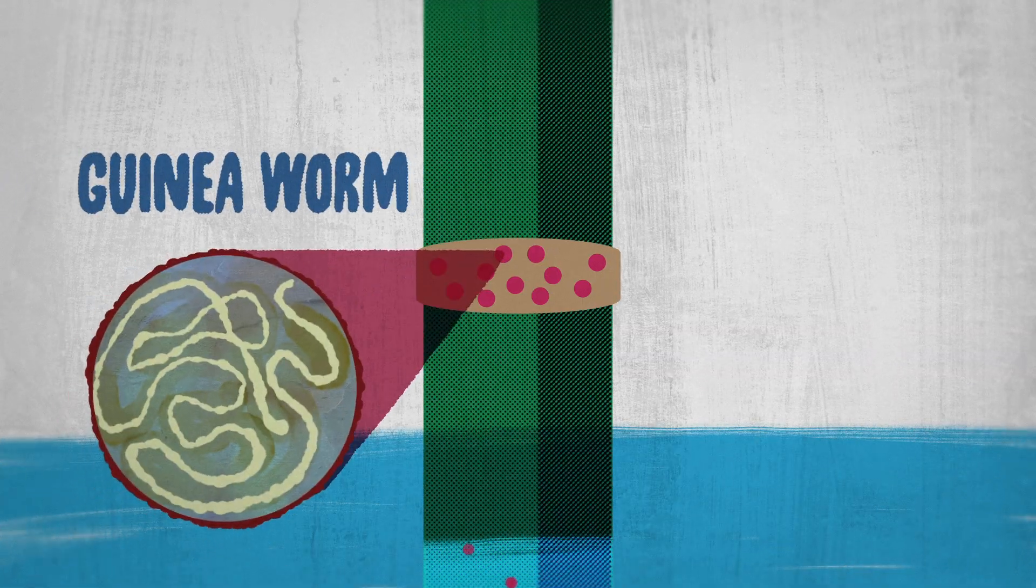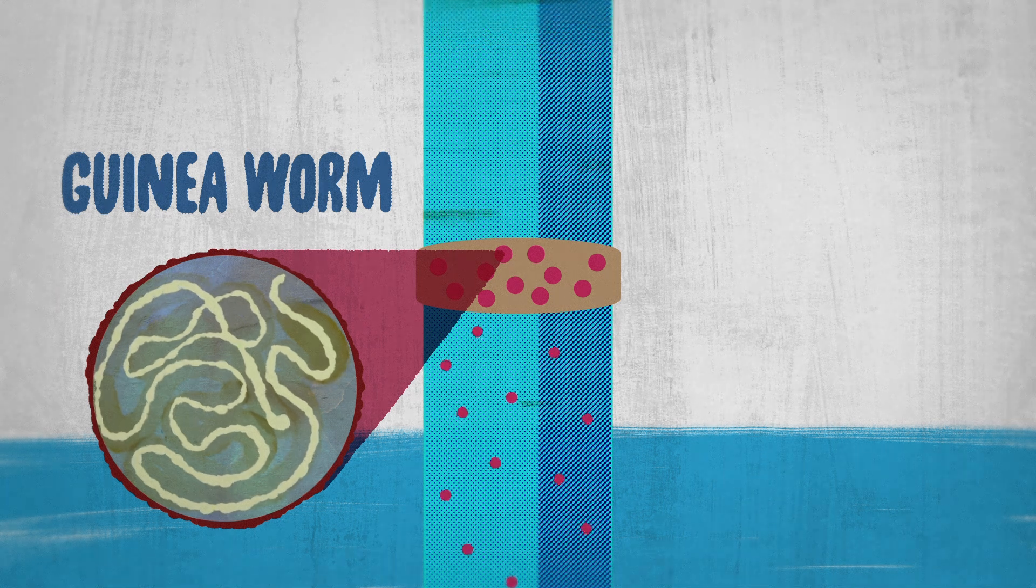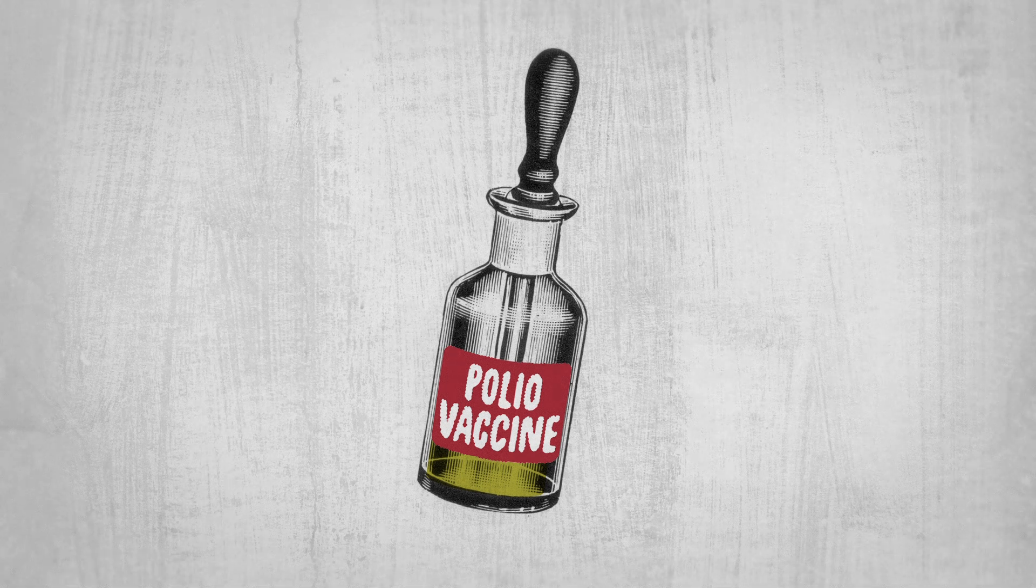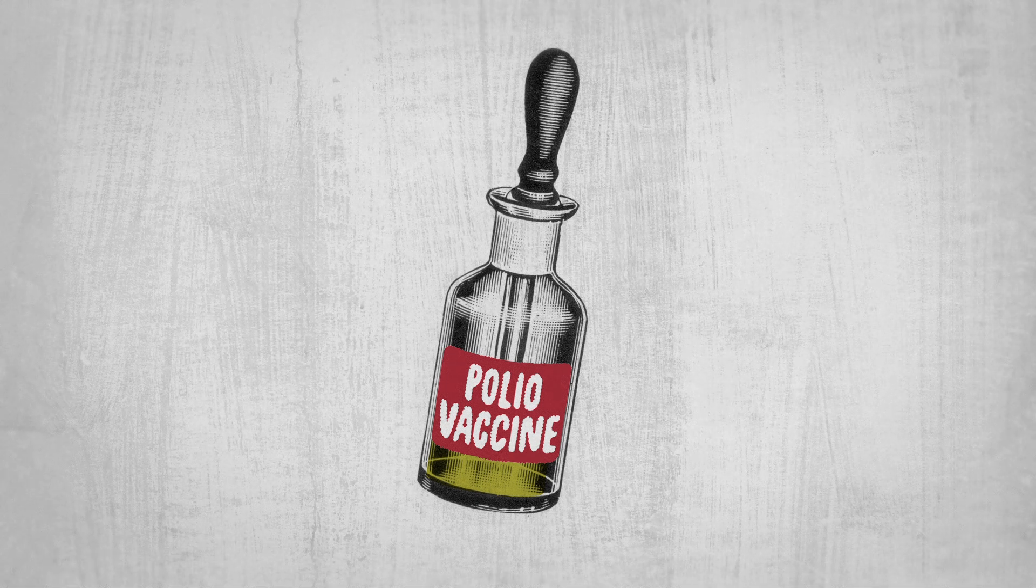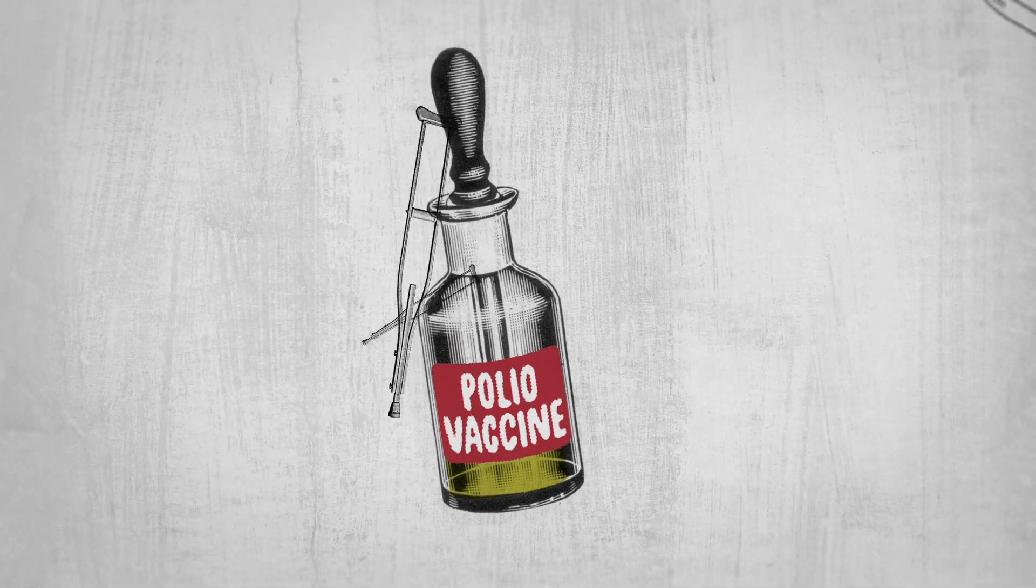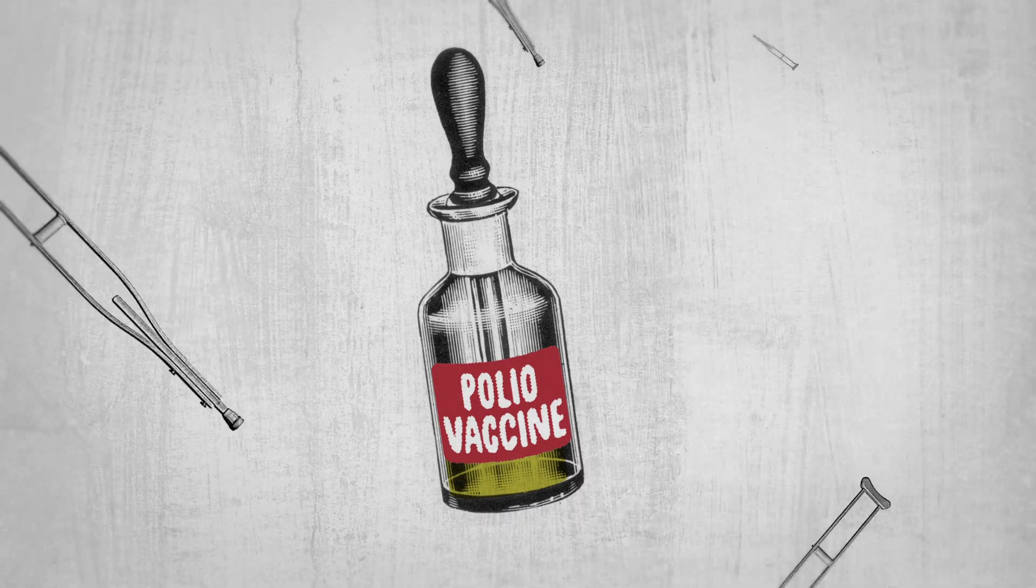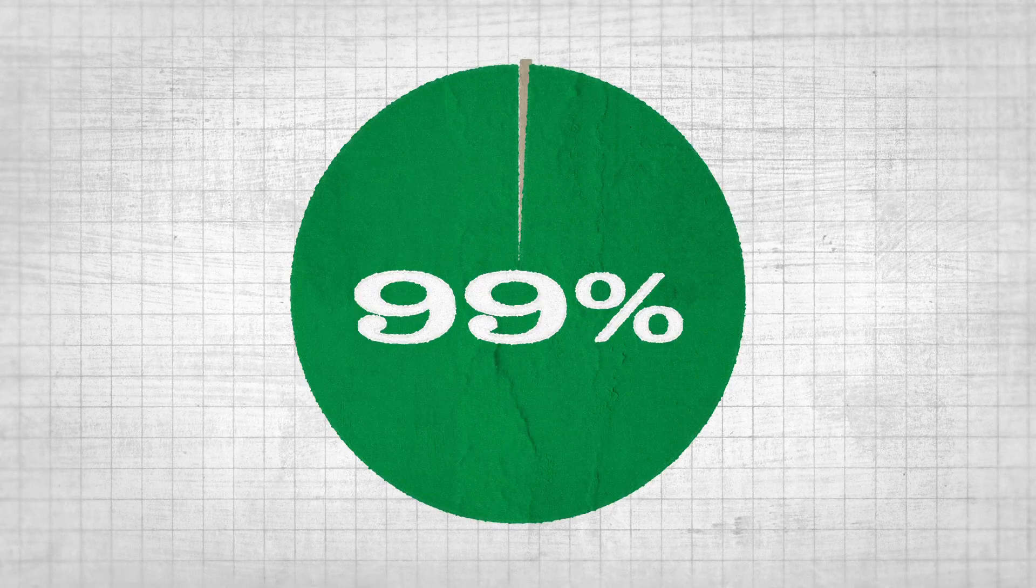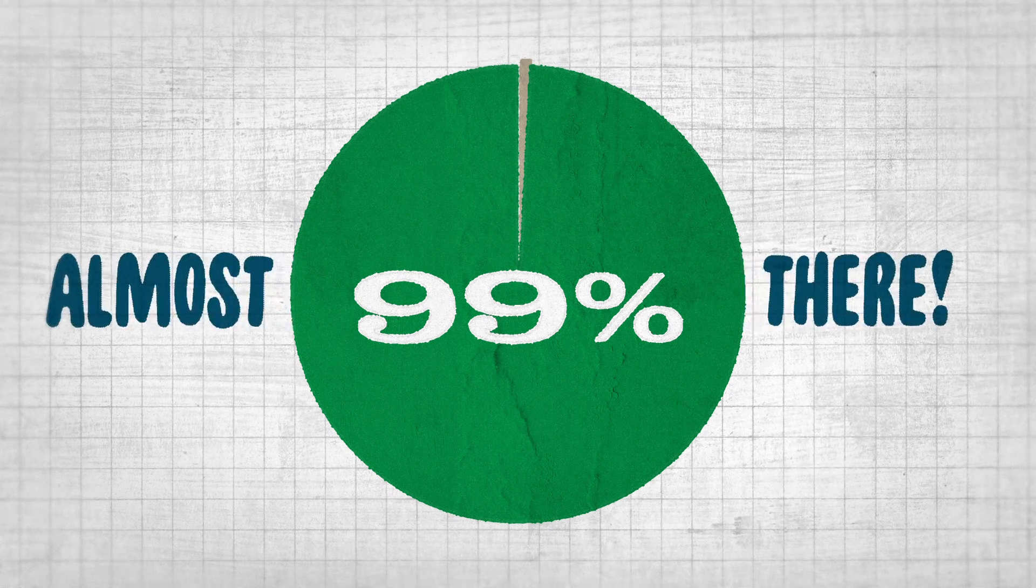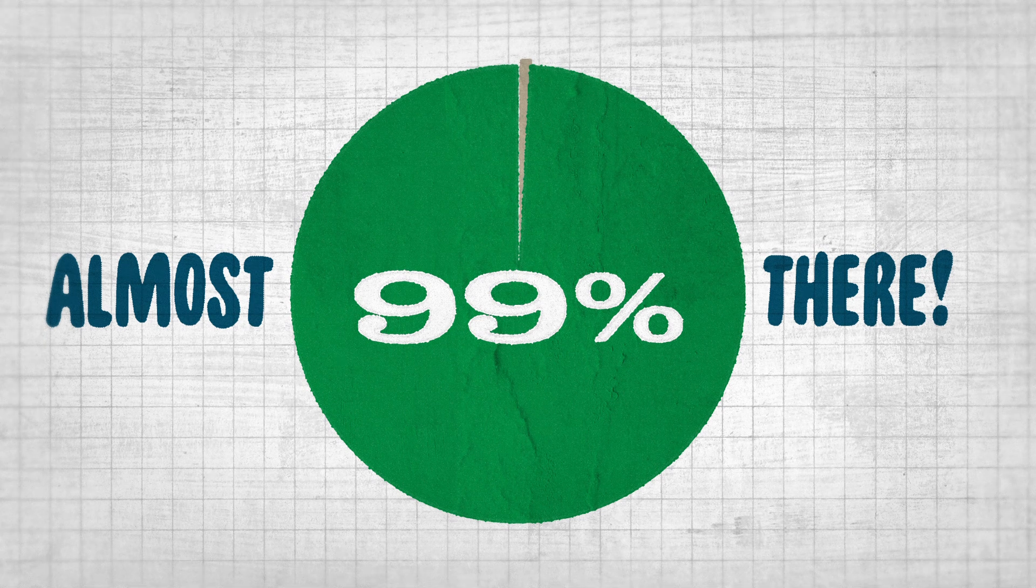Great progress has been made towards eradicating guinea worm disease simply by use of water filters. And vaccination for polio, which previously disabled hundreds of thousands of people each year, is estimated to have prevented 13 million cases of paralysis and 650,000 deaths since 1988. With a 99% drop in infections since the eradication effort began, one final push is all that is needed to ensure that polio will never paralyze another child.